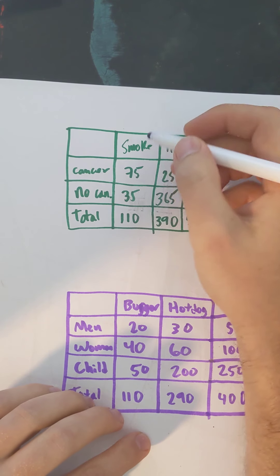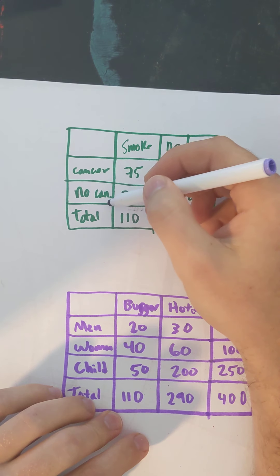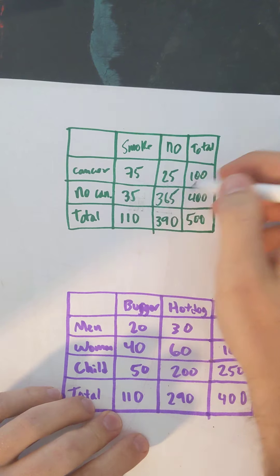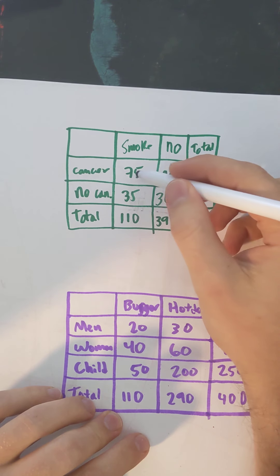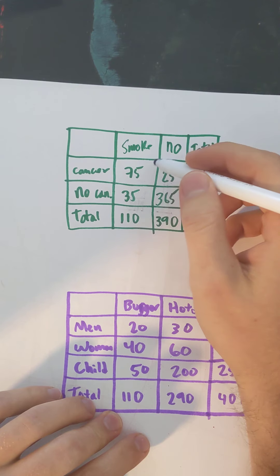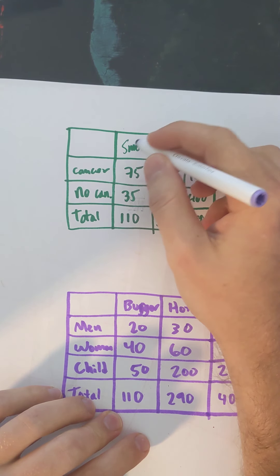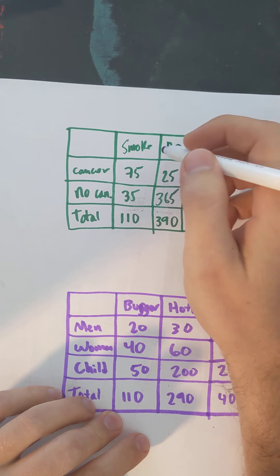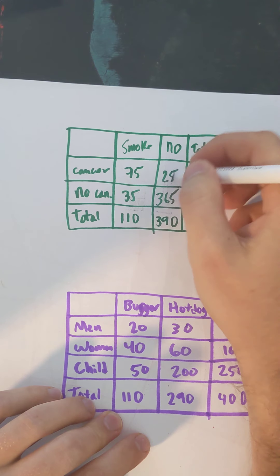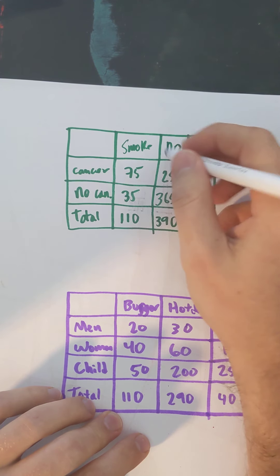For example, look at this table representing 500 people who either do or do not have cancer and either do or do not smoke. We notice that 75 out of 100 people who have cancer are also in the smoke category, and only 25 out of 100 in the cancer category do not smoke.